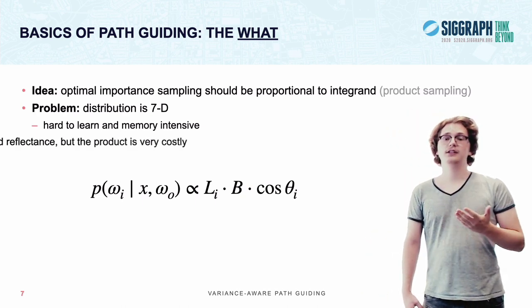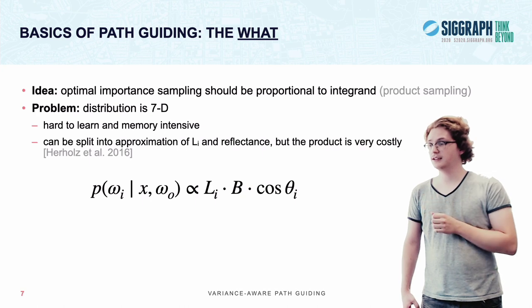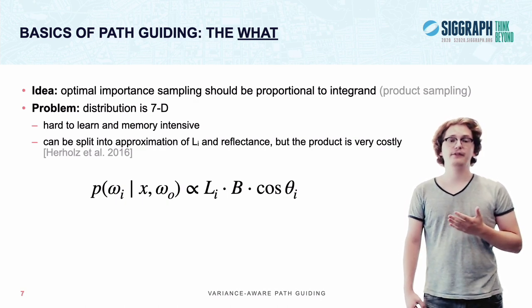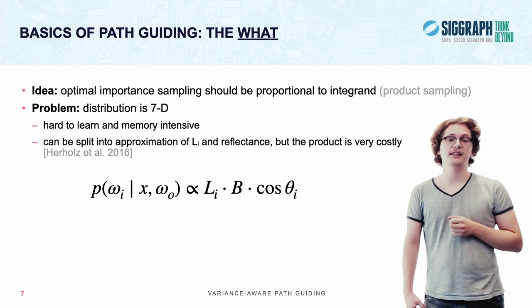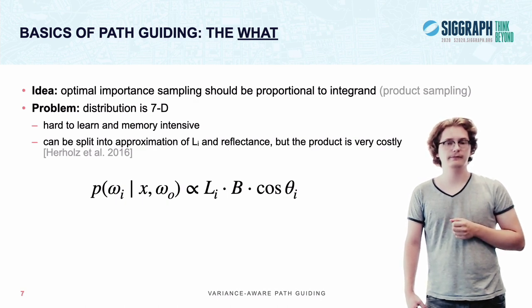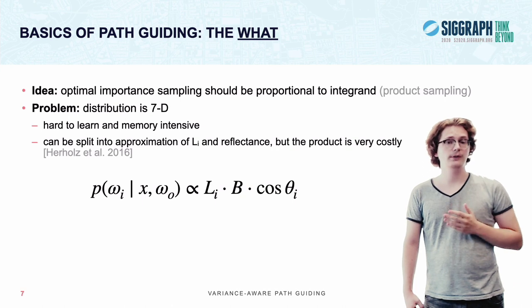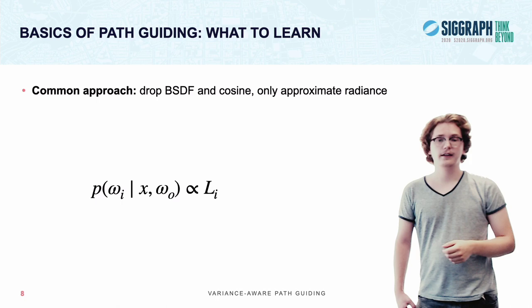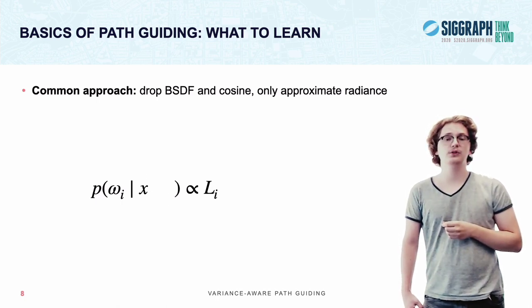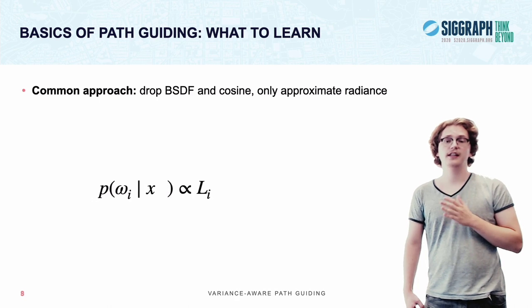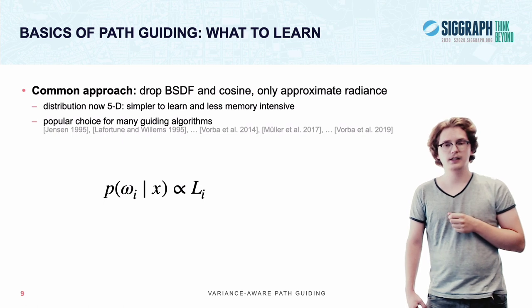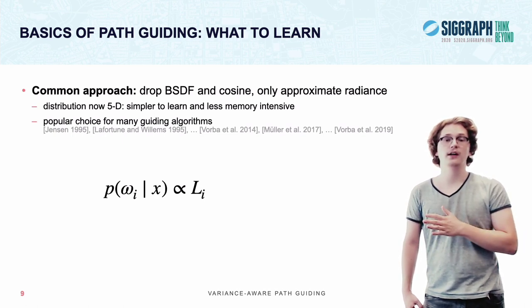Now, there has been some works that try to split this into an approximation of radiance and of reflectance. But evaluating the product of these approximations on the fly can be very costly to sample, which hinders the benefits of their improved sampling. A different strategy that's more common and very popular is to just drop the BSDF and cosine part completely, which frees you from an entire parameter of your distribution, leaving you with a distribution that's only five-dimensional, which is simpler to learn and less memory intensive to work with, which is why it has been a popular choice for many guiding algorithms.